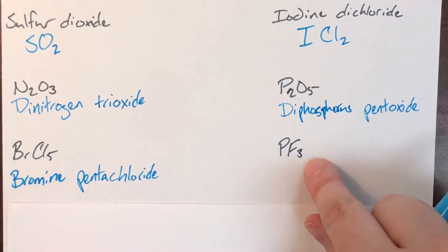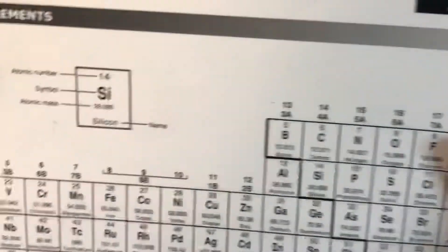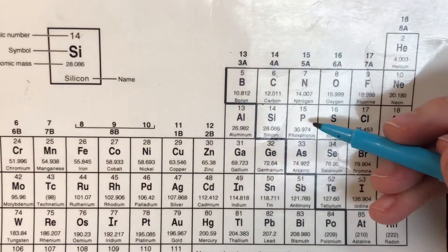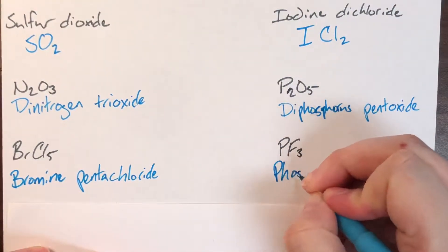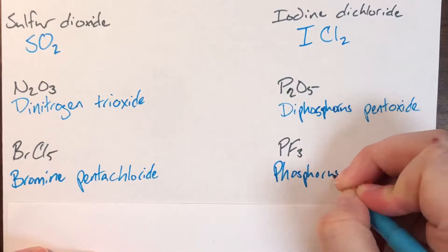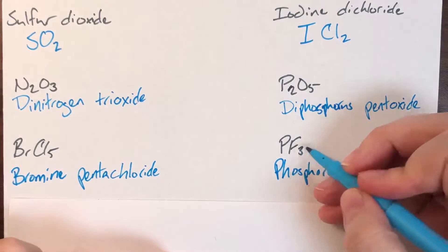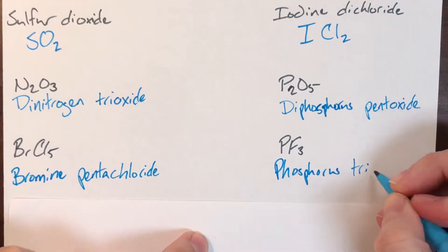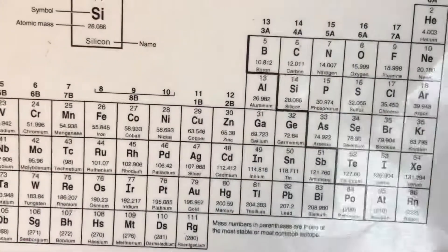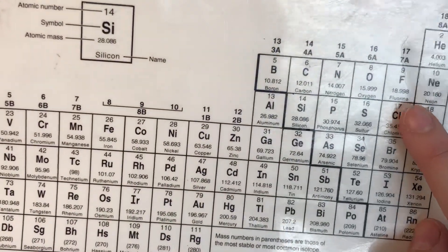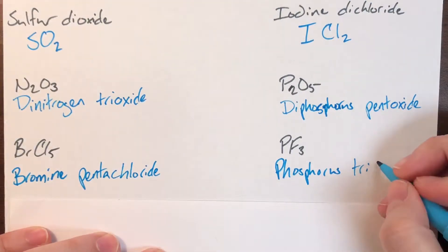Next is PF3. P doesn't have a subscript, so no prefix — just phosphorus. The subscript of 3 means the prefix is tri. F is fluorine, whose compound name is fluoride. So this is phosphorus trifluoride.